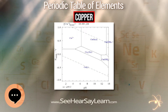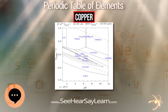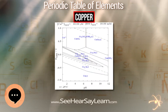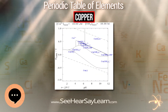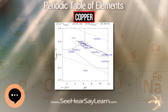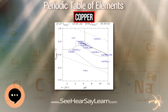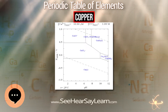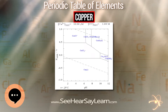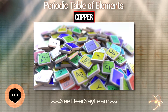In molluscs and crustaceans, copper is a constituent of the blood pigment hemocyanin, replaced by the iron-complexed hemoglobin in fish and other vertebrates. In humans, copper is found mainly in the liver, muscle, and bone. The adult body contains between 1.4 and 2.1 mg of copper per kilogram of body weight.